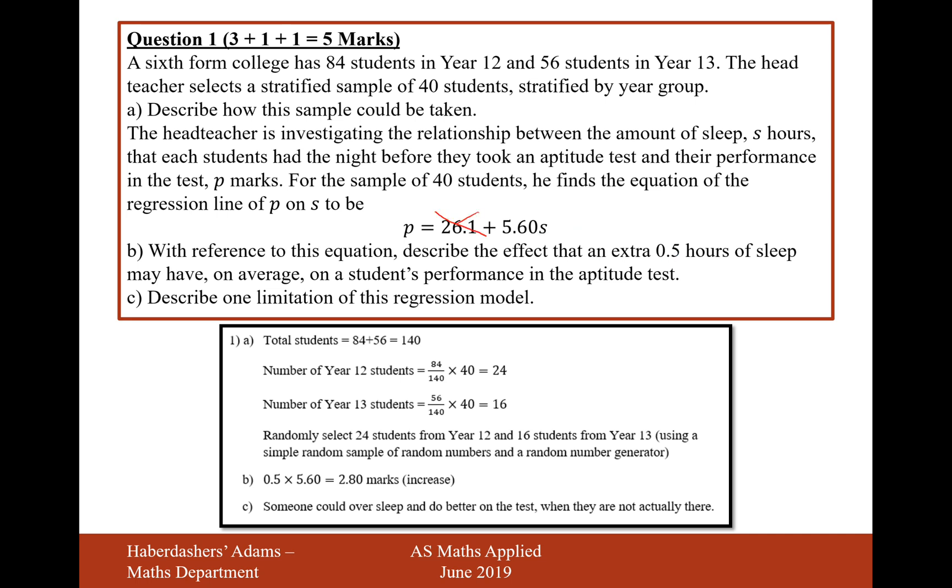So ignore this bit here, because that's just like the y-intercept. We want to see what the effect of an extra 0.5 hours is going to be. So times 0.5 by 5.6, and we're going to get 2.80 extra marks.